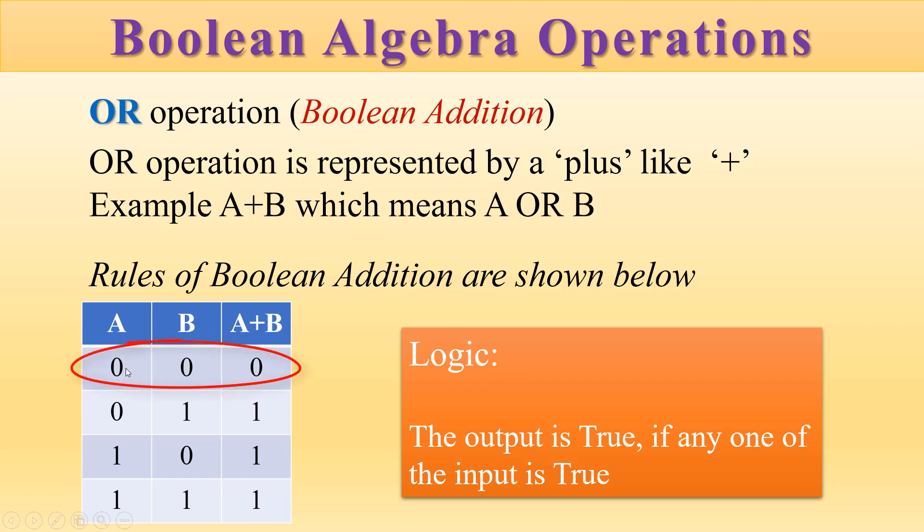If A is 0 and B is 0, the output is 0. If A is 0 and B is 1, the output is 1. If A is 1 and B is 1, the output is 1.